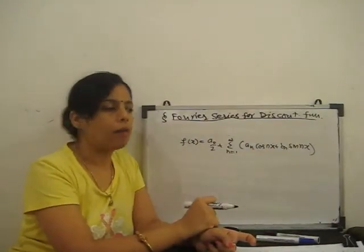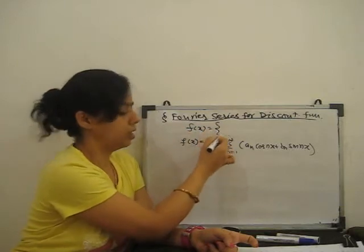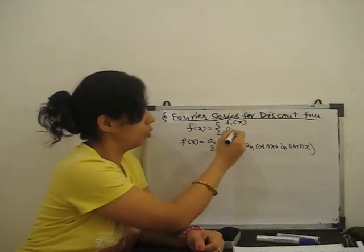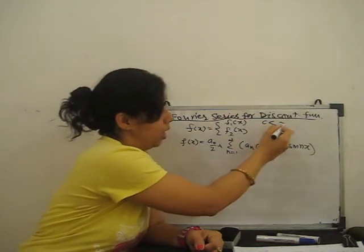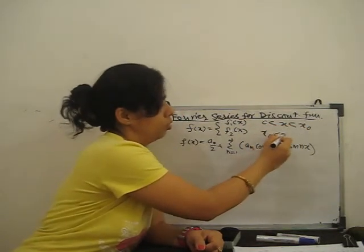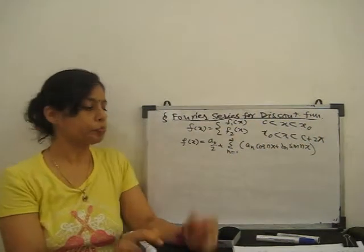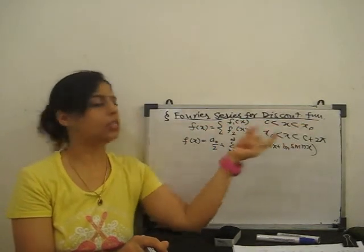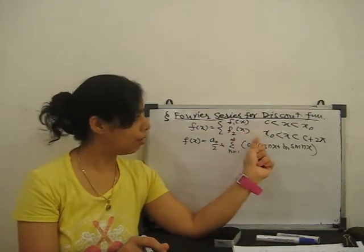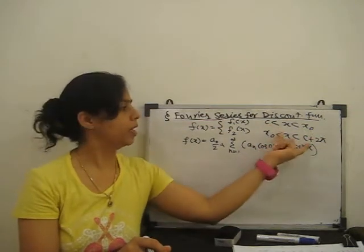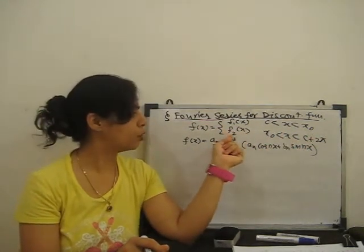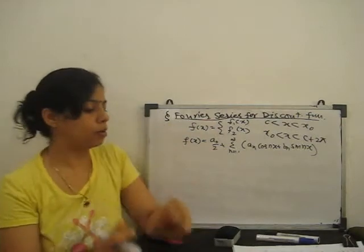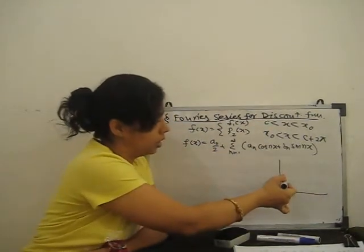If our function f(x) is defined as f1(x) for c to x0, and f2(x) for x0 to c+2π, then our function is defined in two intervals: the function value between c to x0 is given by f1(x), and the function value between x0 to c+2π is given by f2(x).